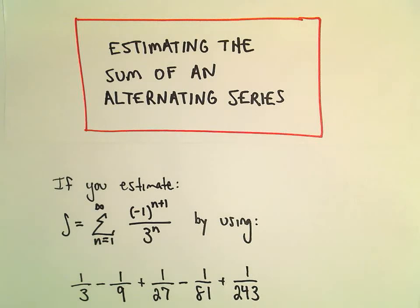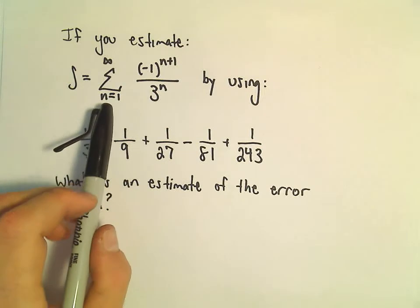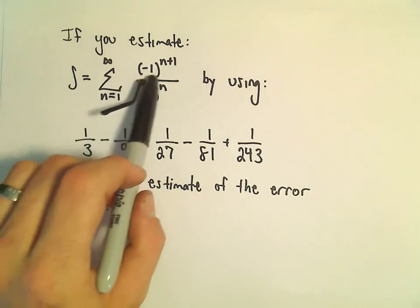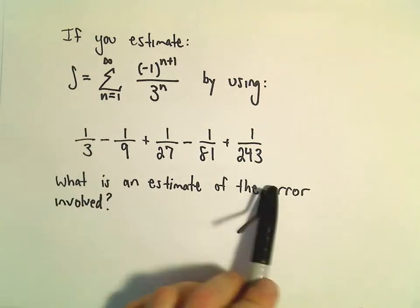All right, so just another example of estimating the sum of an alternating series. So here, suppose we estimate the series (-1)^(n+1) / 3^n by using this expansion.